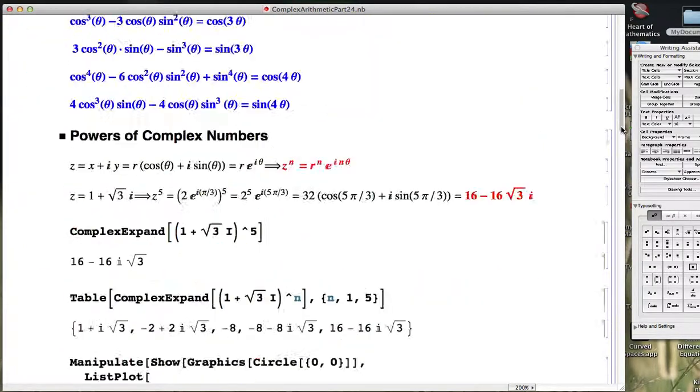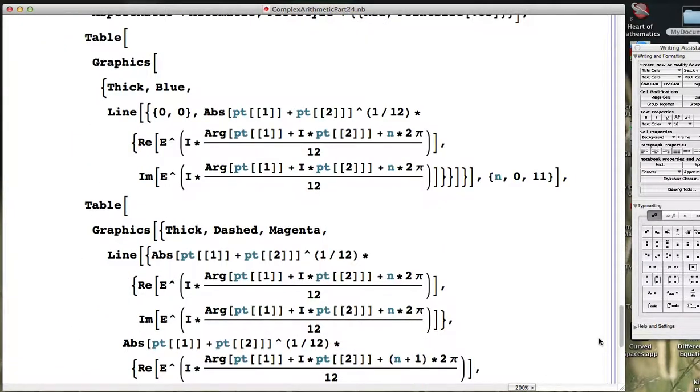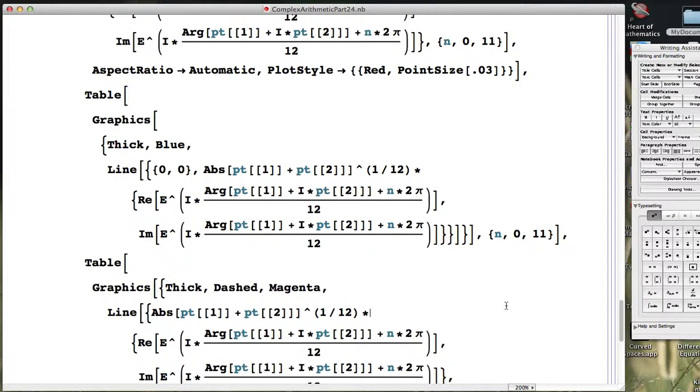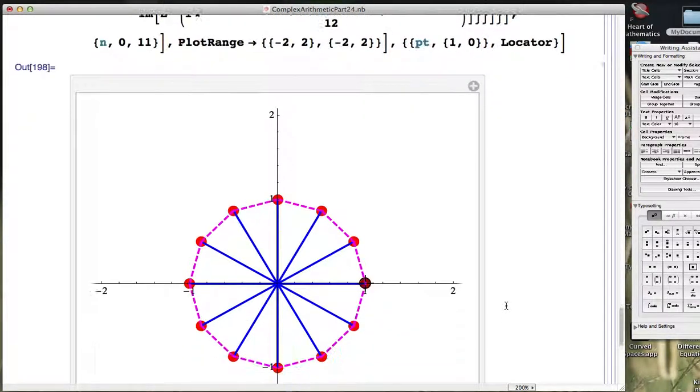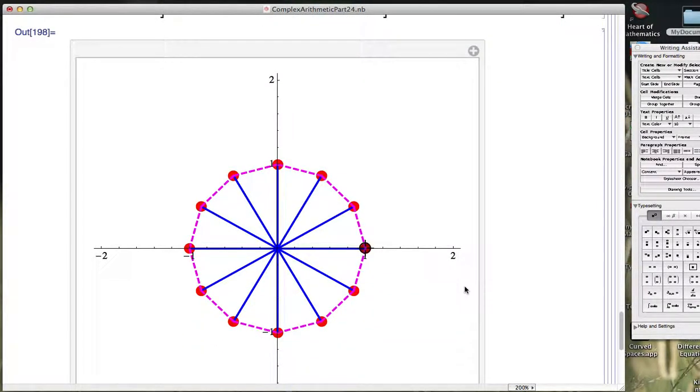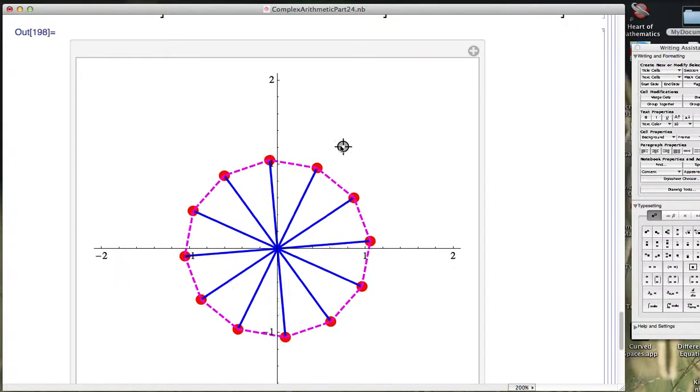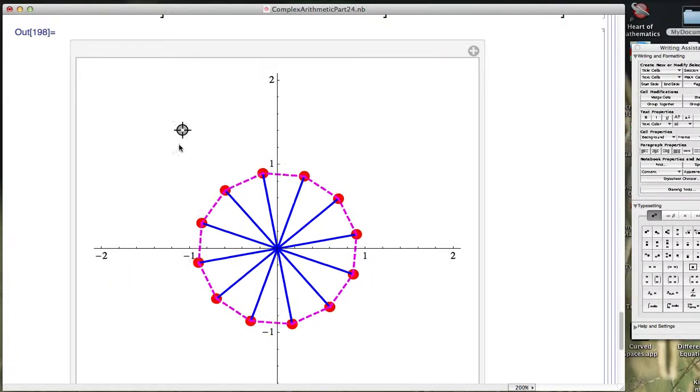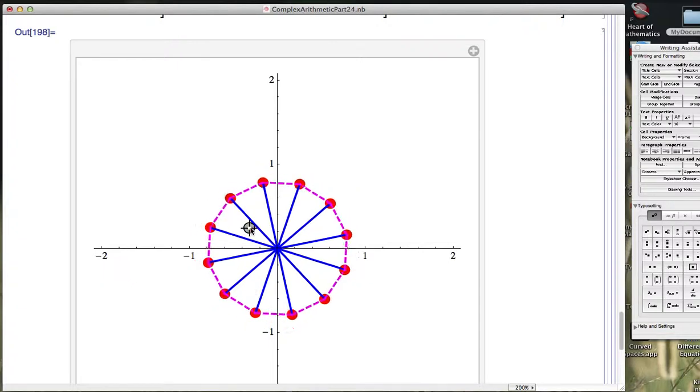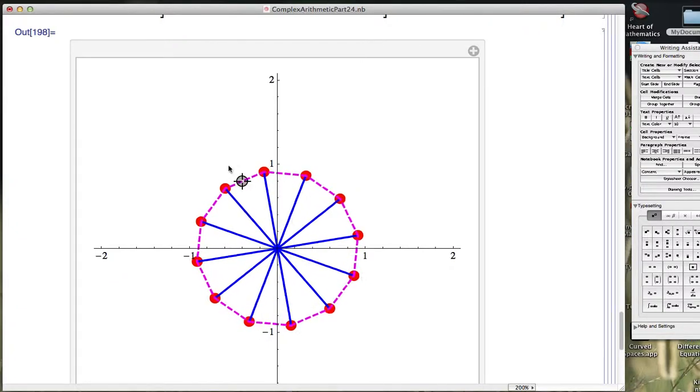In the last video, we made an animation that allowed us to visualize, in this case, the 12th root or the set of 12th roots of any complex number z. The horizontal axis here being the real axis, the vertical axis being the imaginary axis. I have this cursor that I can move around, and I can see how the 12th roots of that number, wherever I happen to be, move around in the complex plane. We see that they always form a regular polygon with 12 sides called a dodecagon.